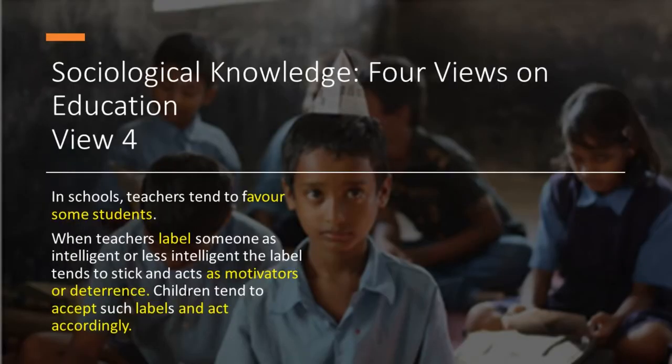Let us consider a fourth view, which looks at what happens inside the school. In schools, teachers tend to favour some students. When teachers label someone as intelligent or less intelligent, the label tends to stick and acts as a motivator or deterrent. Children tend to accept such labels and act accordingly.